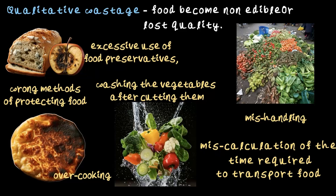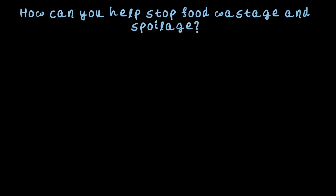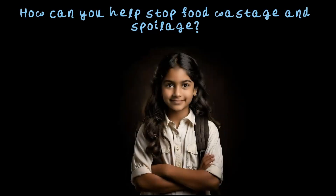Whether it is burned rotis, moldy bread, or milk gone bad — all these are examples of how food can lose its quality and go to waste. It's sad, especially when we know how valuable food is. Now here is the most important and relevant question: how can you stop food wastage and spoilage? There is only one person who can stop it — and that's you. As the younger generation, it's crucial that you take a stand and pledge to make a difference.